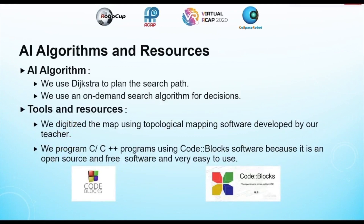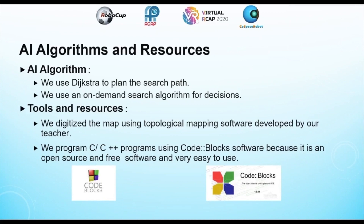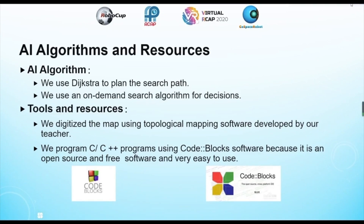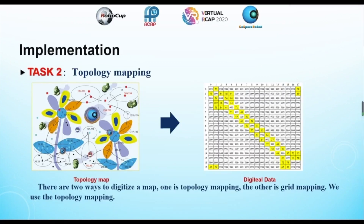Algorithm and resources: AI algorithm. We use D-star to plan the search path. We use an on-demand search algorithm for this task. We digitize the map using topological mapping software developed by our teacher, and program in C or C++ using Code Blocks software, which is open, free, and easy to use. For mapping, there are two ways to digitize a map: topological mapping and grid mapping. We use topological mapping.